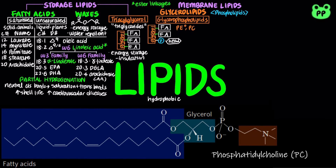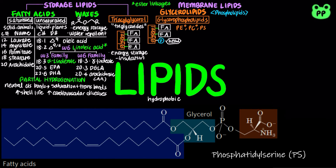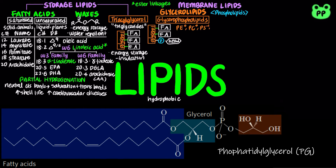Phosphatidylcholine (PC) also has the positively charged head group choline, making the overall charge neutral. Phosphatidylserine (PS) has the neutral polar amino acid serine as its head group, making the overall charge -1. Phosphatidylglycerol (PG) has the neutral glycerol as its head group, making the overall charge -1 as well.